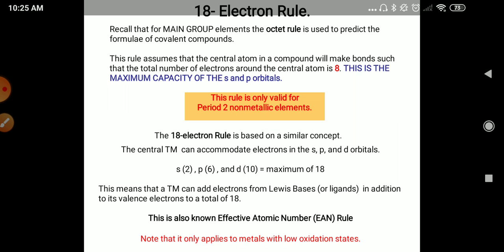Today's topic is 18 Electron Rule and EAN Number Rule. Students, the 18 Electron Rule is for the transition element. We have to discuss today the 18 Electron Rule for transition elements.